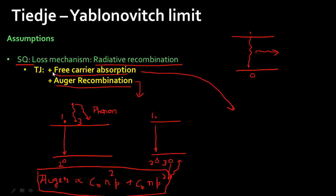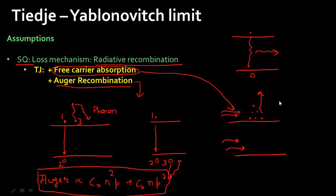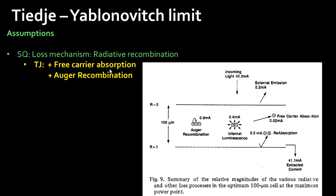Another fundamental loss mechanism is free carrier absorption. If you have incoming photons, instead of exciting an electron-hole pair, they can be absorbed by free carriers. In an n-type semiconductor with many electrons, a photon gets absorbed by a free electron, which gets excited and subsequently loses that energy as phonons. This is also a fundamental loss mechanism occurring in any semiconductor material. It turns out Auger recombination is actually a much bigger loss mechanism compared to free carrier absorption.